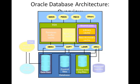An Oracle instance is comprised of memory structures and background processes. An Oracle instance supports only one database, so on a particular host you can have multiple instances — 10 or 20 as per your need — but one instance supports only one database. As you can see on screen, there is something called SGA, the System Global Area. Under the System Global Area, we have components called the Database Buffer Cache and on the right-hand side, the Redo Log Buffer Cache.